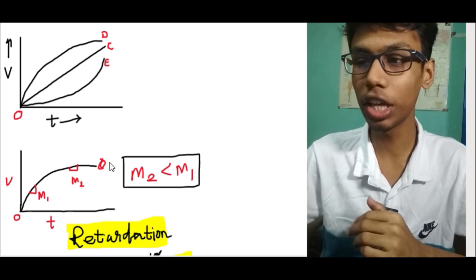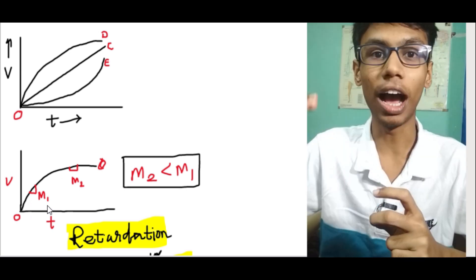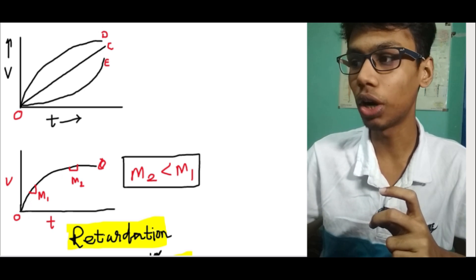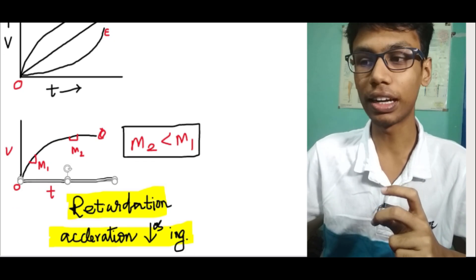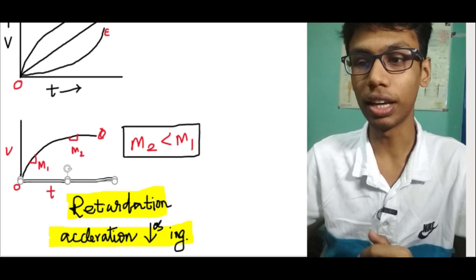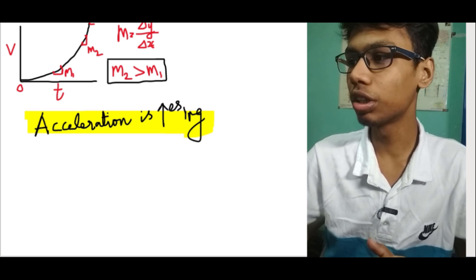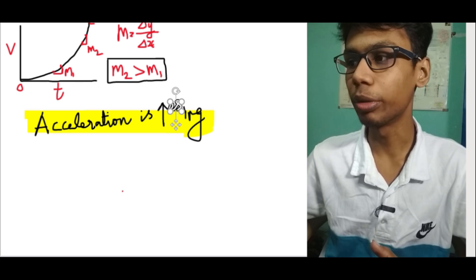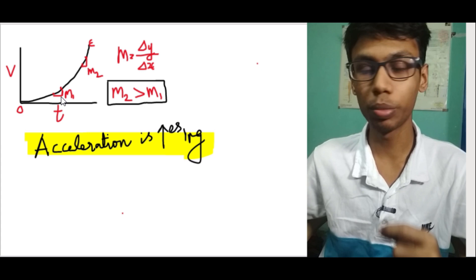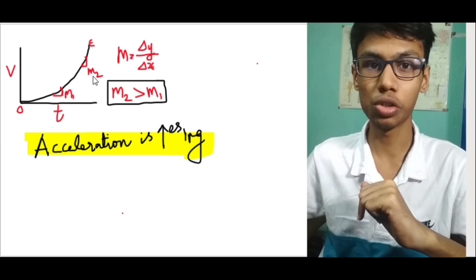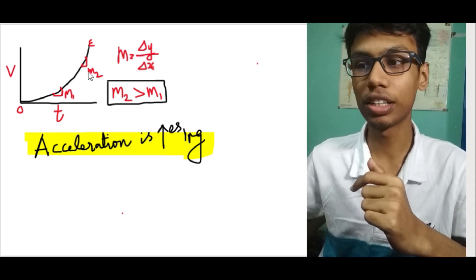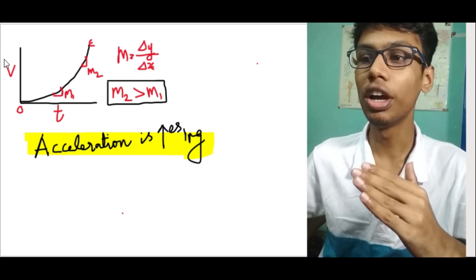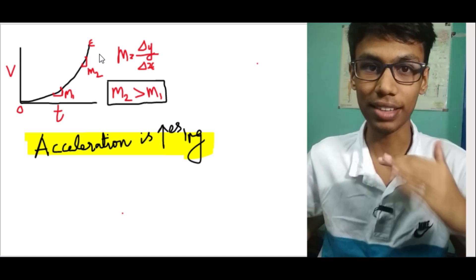In a velocity-time graph for the OD curve, the slope goes on decreasing — that means acceleration goes on decreasing, which means retardation or decreasing acceleration. For the OE curve in the velocity-time graph, we look at the two points and find the slope. M1 has lower acceleration and M2 has higher acceleration, so in OE, acceleration goes on increasing.